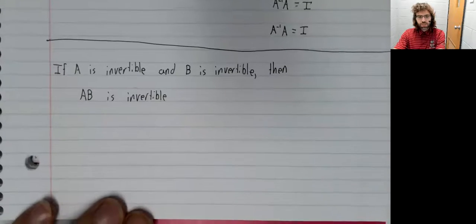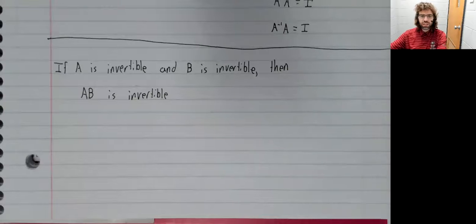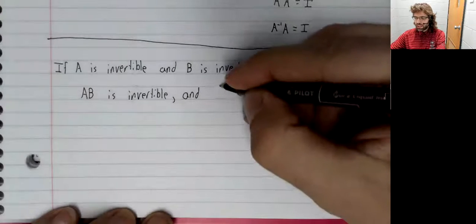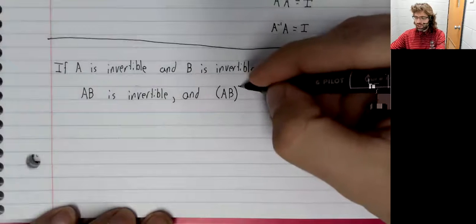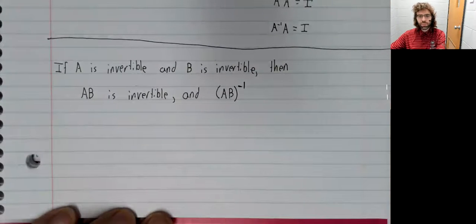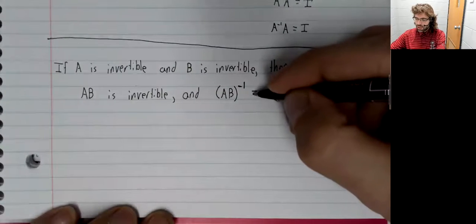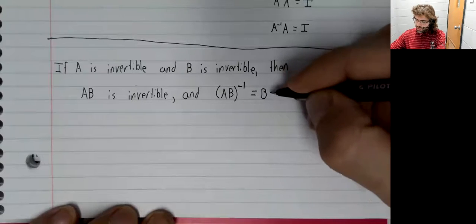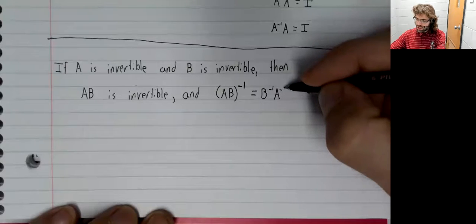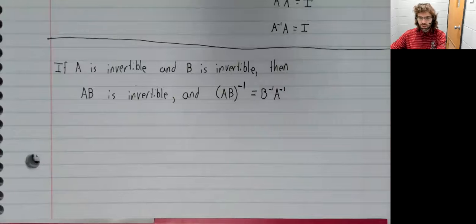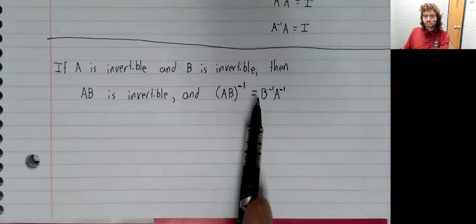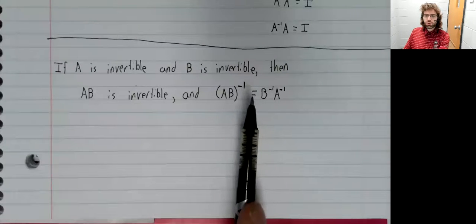The product of two invertible matrices is invertible. And we can do better than that. We can tell you what the inverse of two invertible matrices is. The inverse of a product is the product of the inverses written in reverse order. We sort of blew past transposes, but if this form looks familiar, it's because we had a very similar result for transposes.